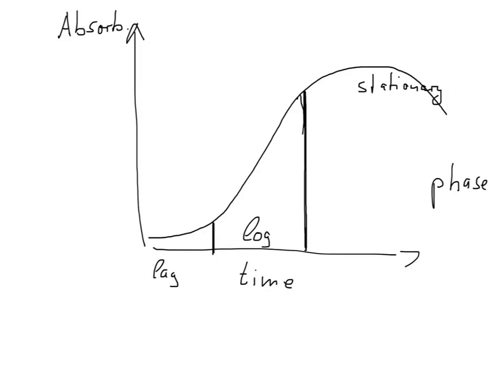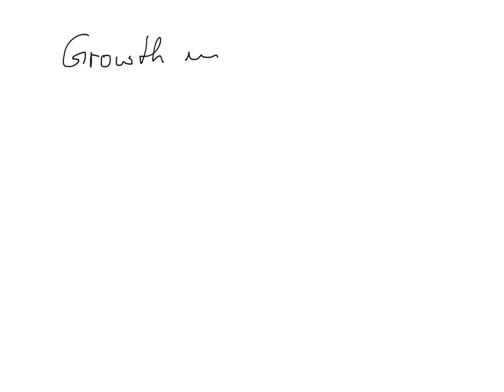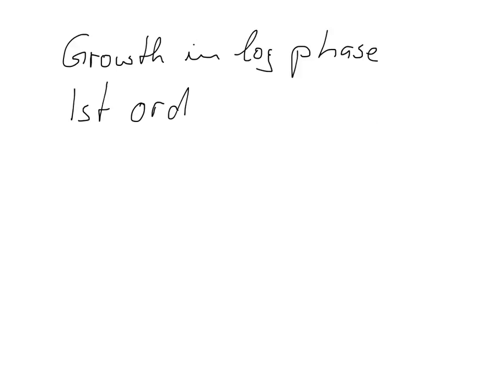So how can we calculate the growth of a bacterial culture? Well, first of all we need to remind ourselves that the growth of a culture in the log phase generally follows a first order reaction, and this is really related to reaction kinetics.